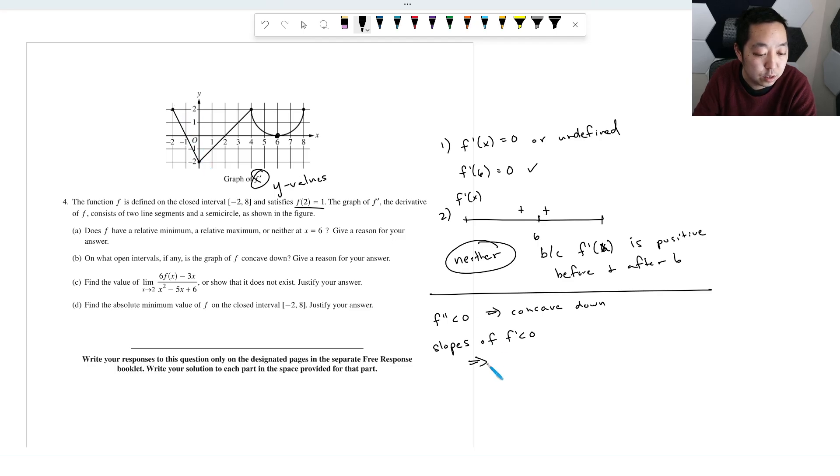They're from here to here. So from negative two to zero. Here, it's positive slopes. Here, it's negative slopes from four to six. Okay, those are the intervals, or you could use interval notation. You don't have to use interval notation. Yeah, and that would be sufficient.